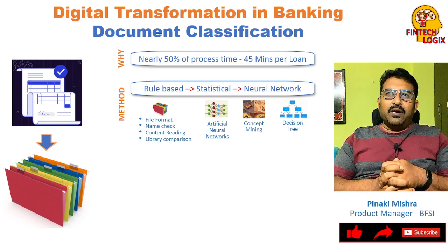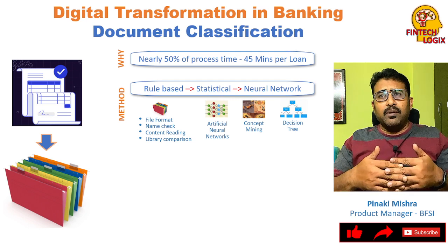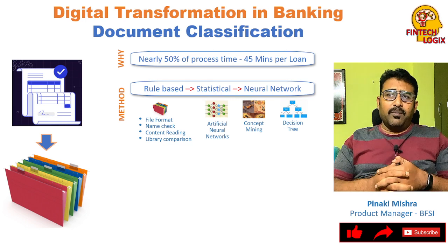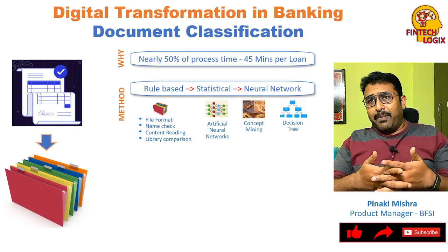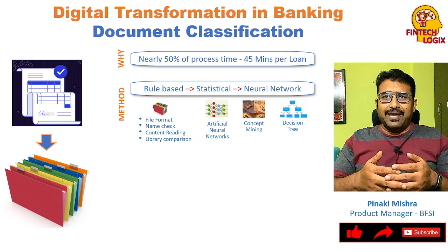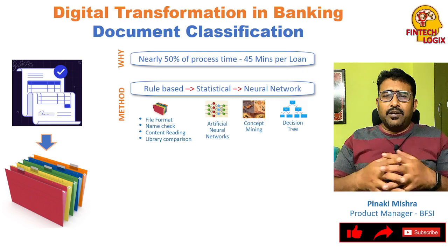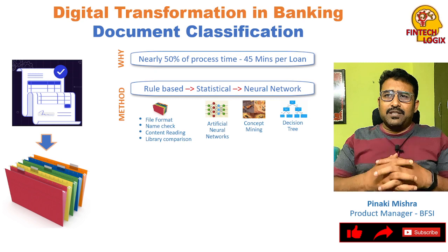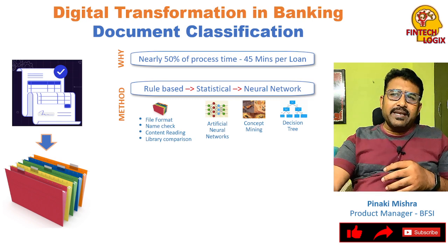Rule-based frameworks were never enough, so we later moved to statistical formats — modern terms like neural networks and artificial neural networks. We built models using concept mining and decision trees to classify documents into different categories. Day by day, these solutions are getting modernized to address document classification problems with much higher accuracy.